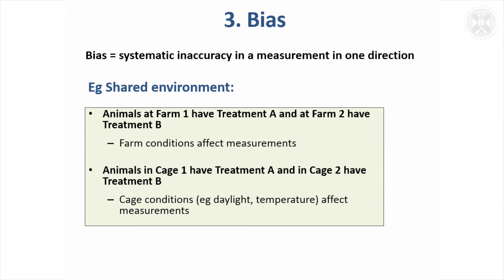Even if you don't think they will affect the measurements, when you write up your studies your reviewer might think: well, you only had one cage or one farm — that might have biased your results — and you might have to argue carefully as to why you don't think it has.